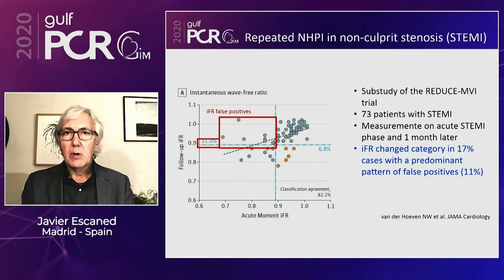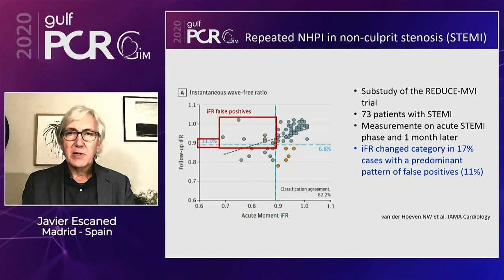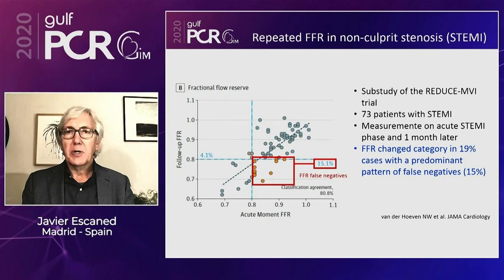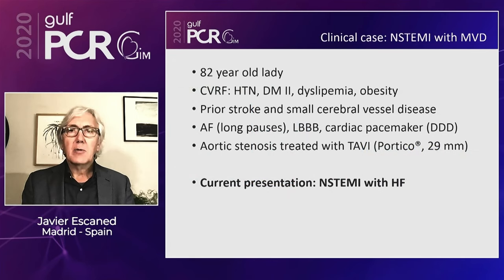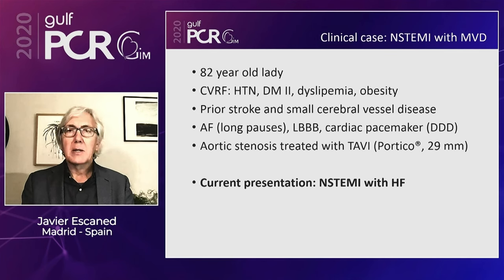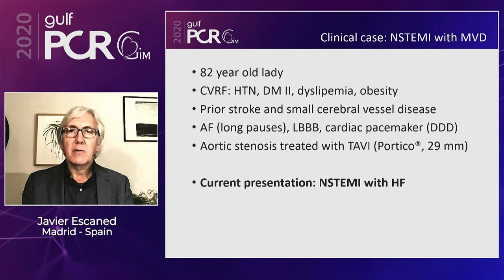With all this in mind, I would like to present a case of an 82-year-old lady with multiple cardiovascular risk factors. She had a prior stroke and small cerebral vessel disease, a pacemaker implanted because of atrial fibrillation with long pauses, and aortic stenosis treated with a TAVI — a Portico device, 29 millimeters. She presented with non-ST elevation myocardial infarction with heart failure.